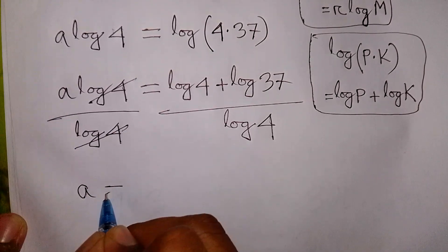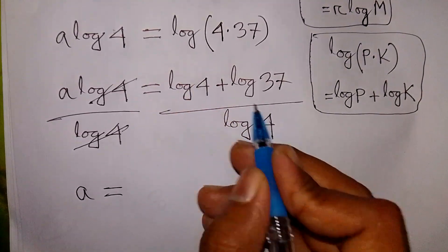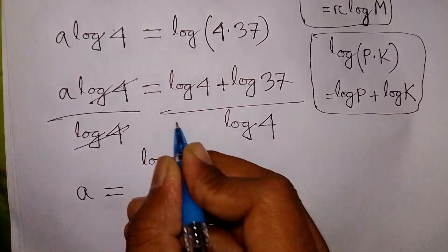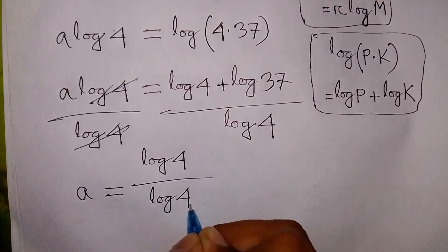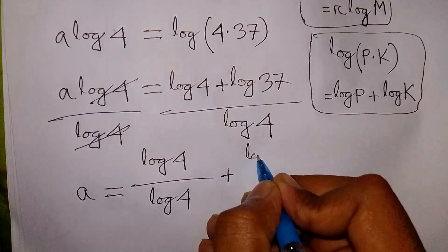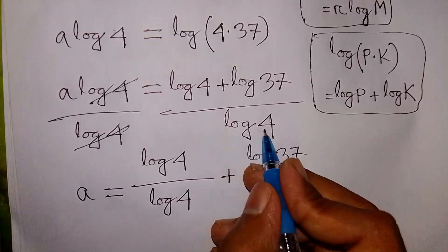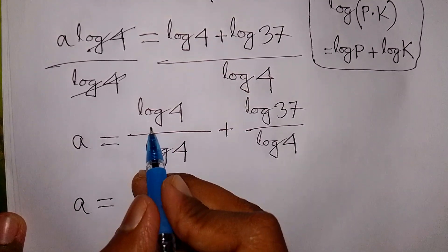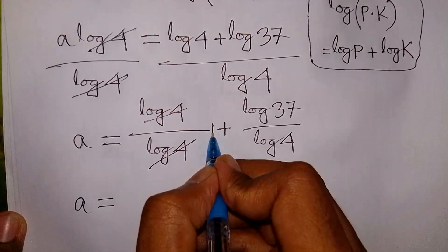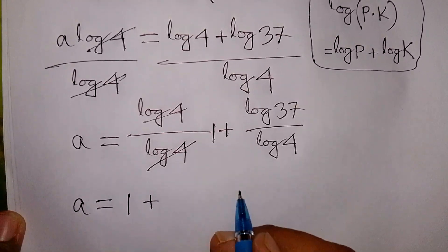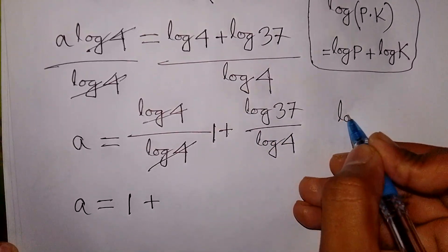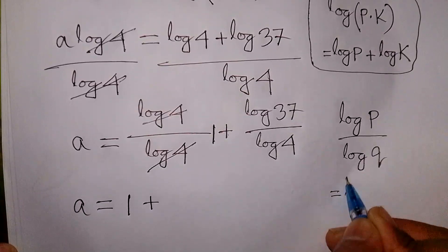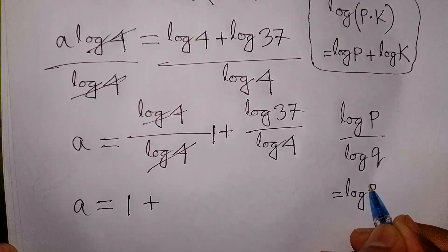Dividing both sides by log 4, the log 4 on the left cancels out. So a equals log 4 over log 4 plus log 37 over log 4, which simplifies to 1 plus log 37 over log 4. Applying the change of base formula, log p over log q equals log p base q, so a equals 1 plus log 37 base 4.